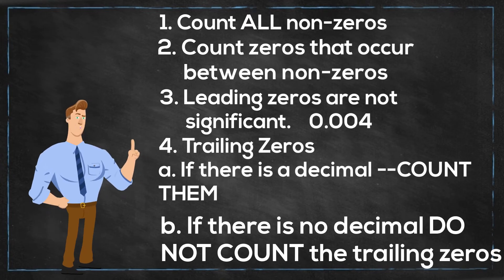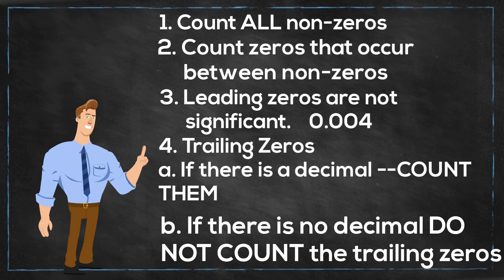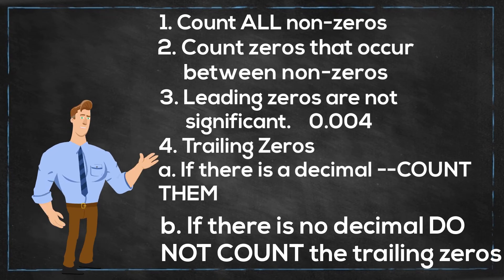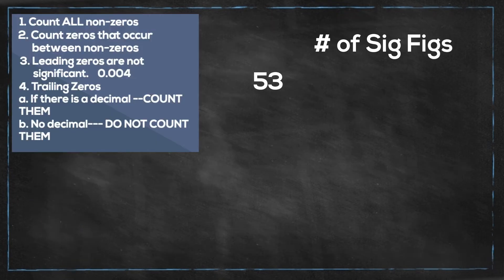So let's get started with a couple of examples, and I have the rules here to remind you. 53. This one is fairly straightforward. They are all non-zeros, the 5 and the 3. So you will have two significant figures.